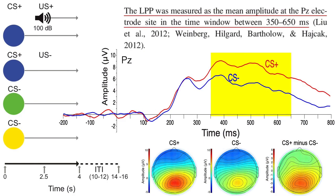For example, Felix measured the LPP as the average voltage from 350 to 650 milliseconds at the PZ electrode site. Why did he use this time window and this electrode site? You might think you could just look at the waveforms and scalp distributions and see that this is where the effect is. But it can be dangerous to use what you see in the data to determine how you analyze the data.